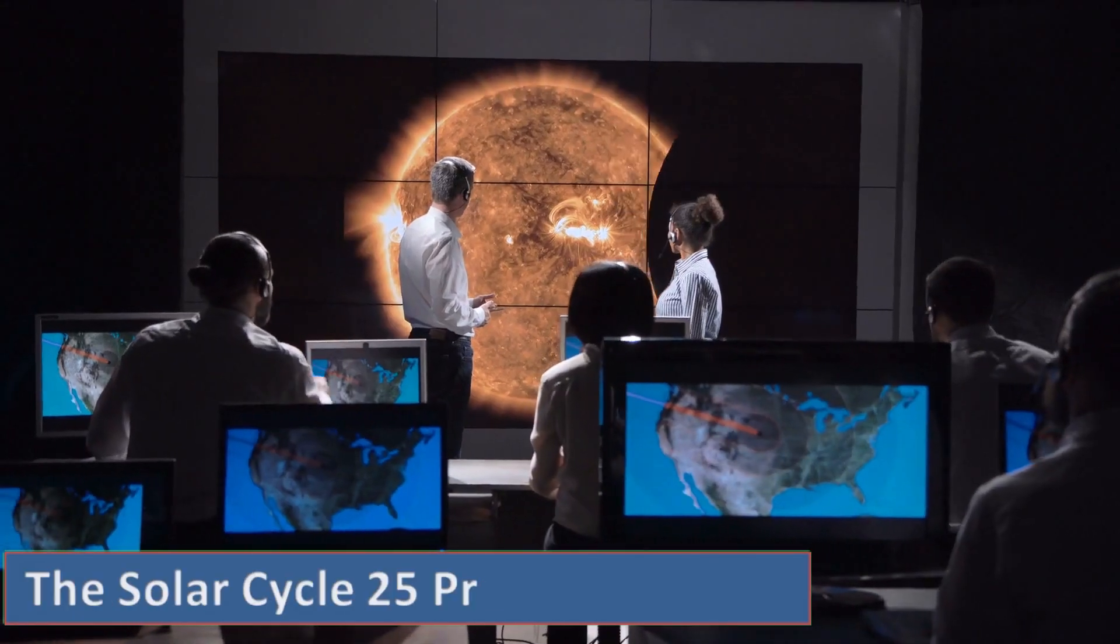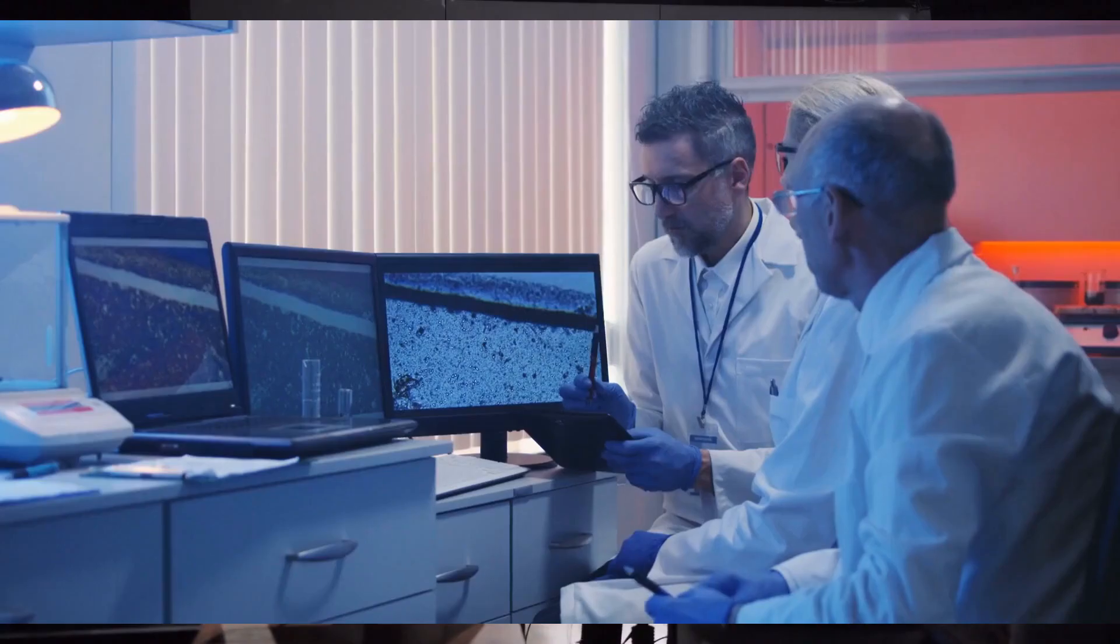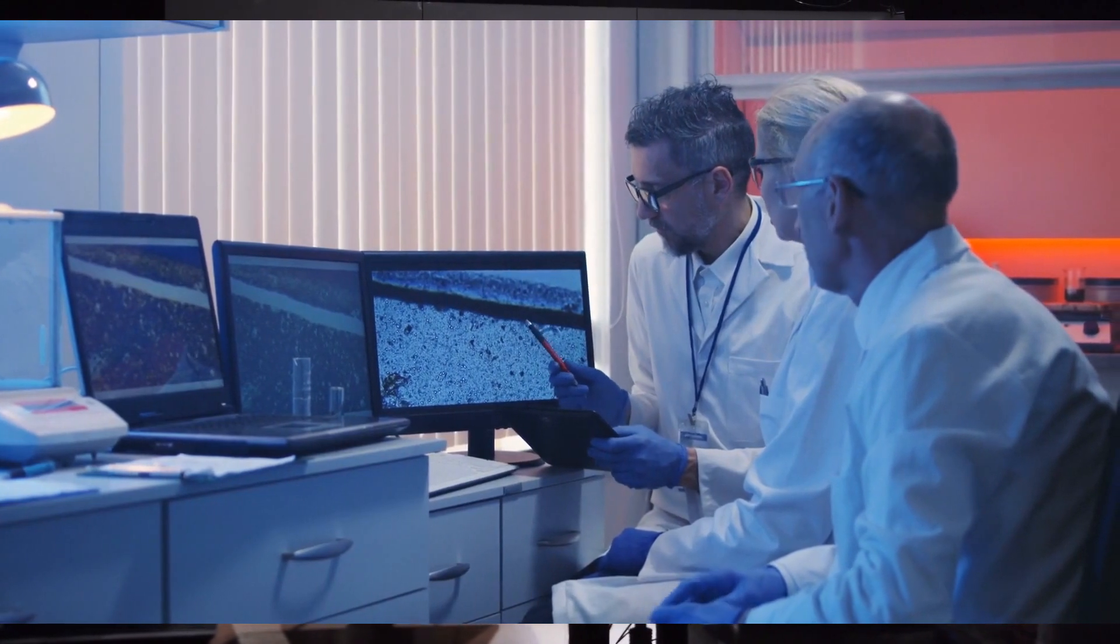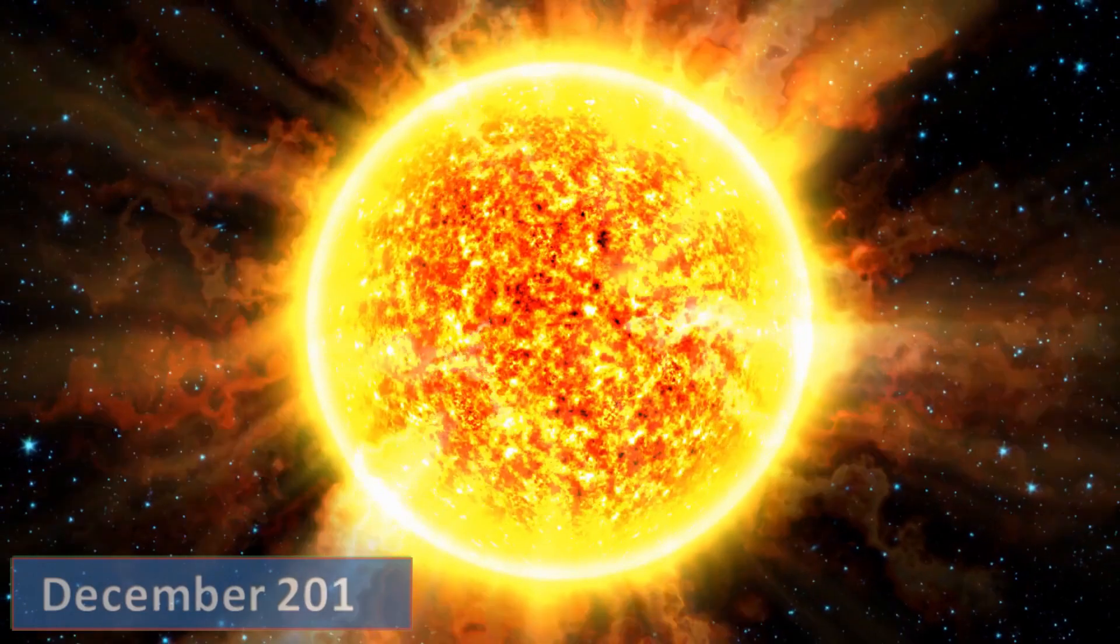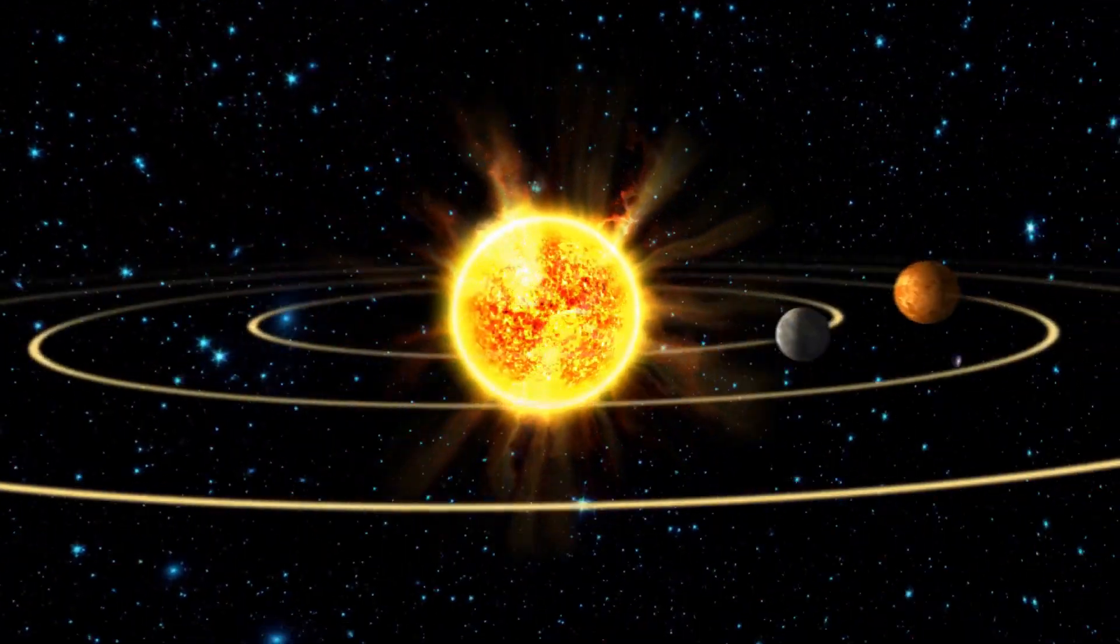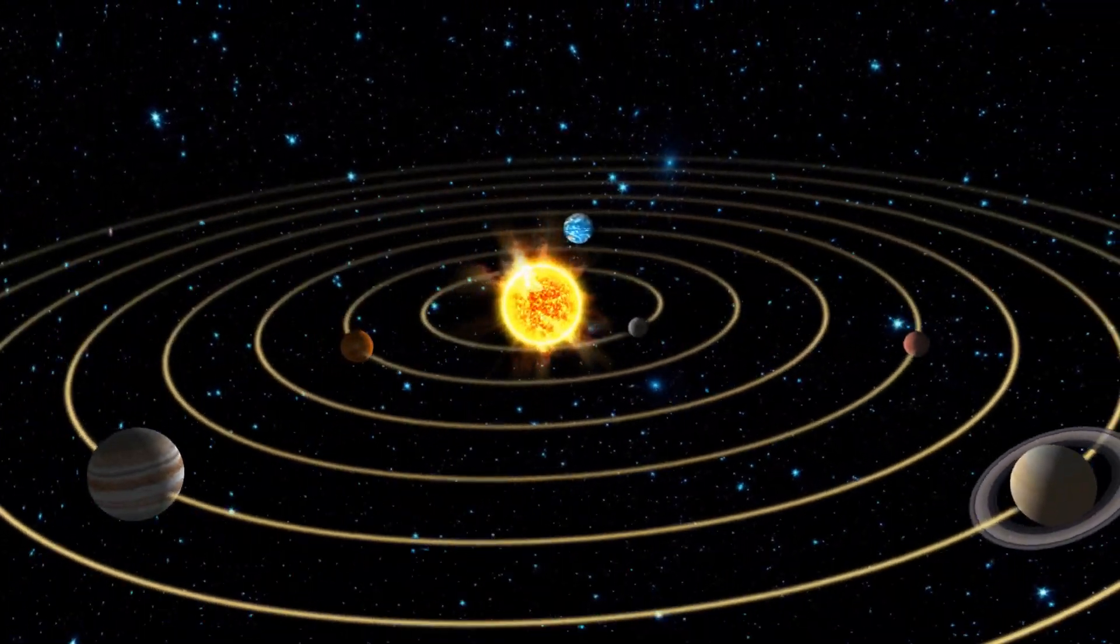The Solar Cycle 25 Prediction Panel, an international group of experts co-sponsored by NASA and NOAA, announced that solar minimum occurred in December 2019, marking the start of a new solar cycle. Because our sun is so variable, it can take months to declare this event.